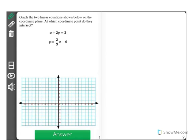Graph the two linear equations shown below on the coordinate plane. At which coordinate point do they intersect? We have x plus 2y equals 2, and y equals 2 thirds x minus 6.